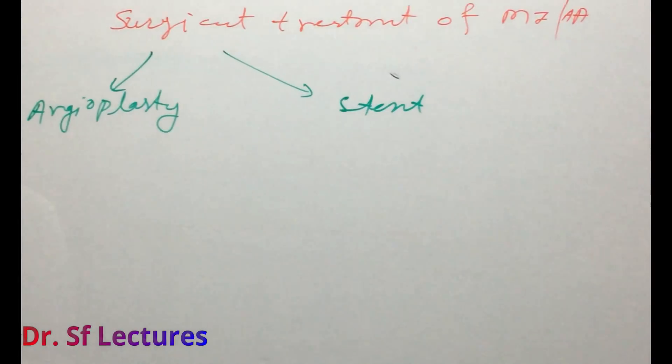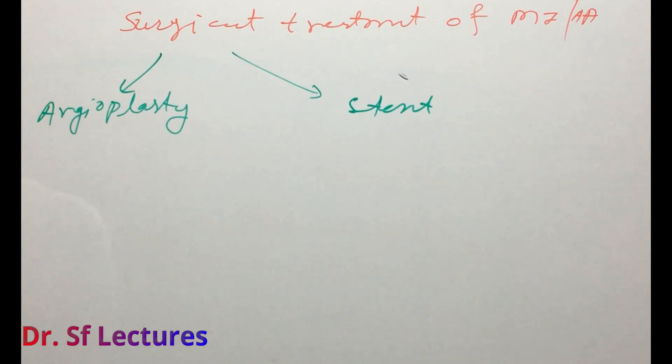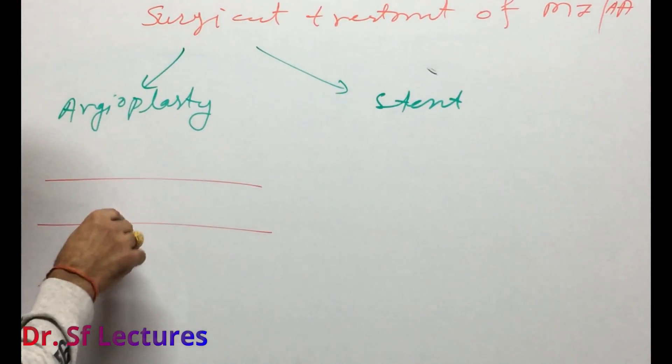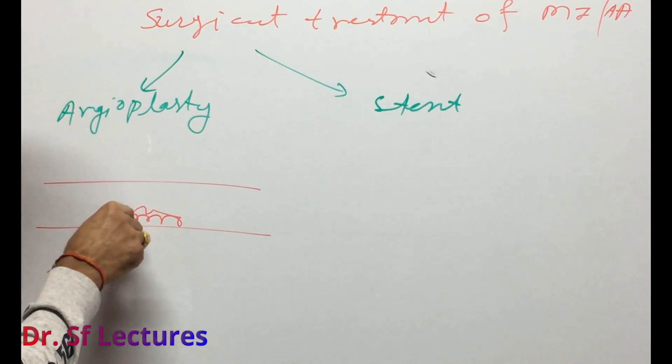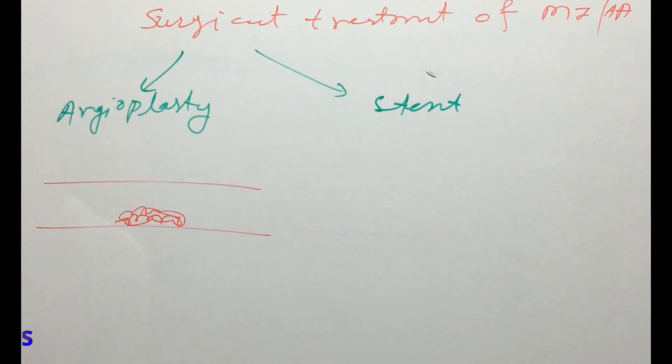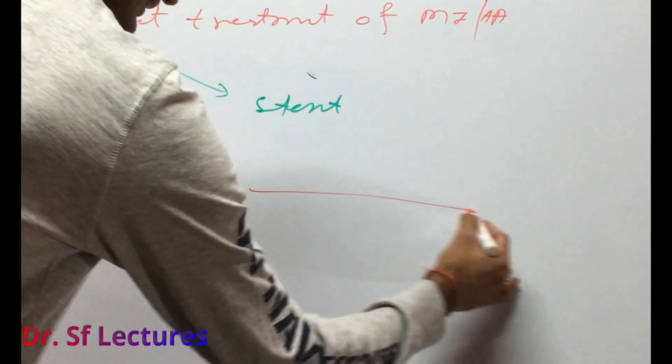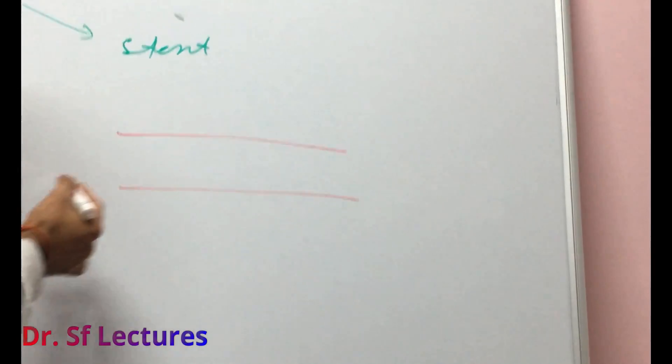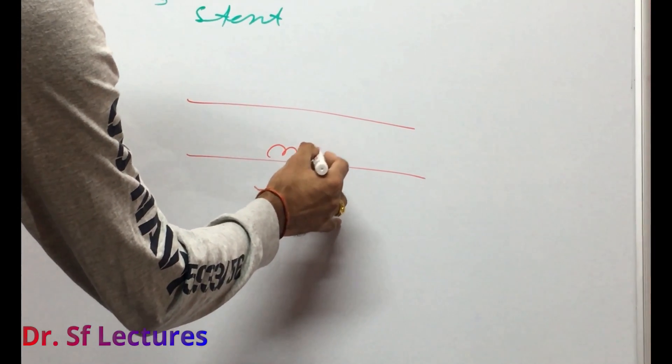In angioplasty, cardiosurgeon will remove the clot. This is our coronary artery and here is the plaque or clot. A cardiologist will remove it. In stent, this is our coronary artery and here is plaque or clot.